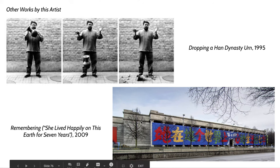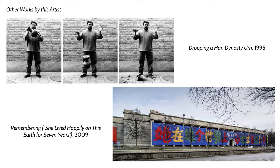The piece called Remembering, or She Looked Happily on This Earth for Seven Years, was constructed as a result of the earthquake in Sichuan in the late 2000s. This earthquake had a massive devastating impact. A lot of schools had been put up quickly and shoddily built, with a lot of government corruption involved. When the earthquake happened, many of these buildings collapsed, trapping children and teachers inside. China never released a formal death toll for the Sichuan earthquake, probably to avoid accountability for contributing to those deaths.